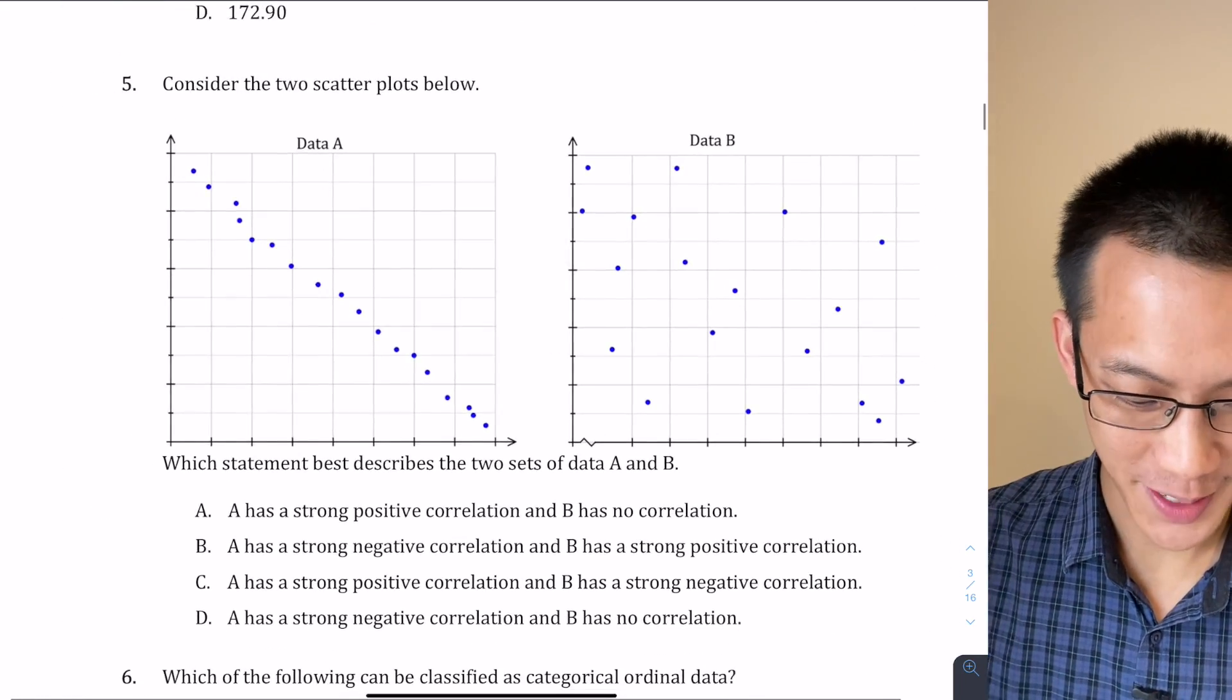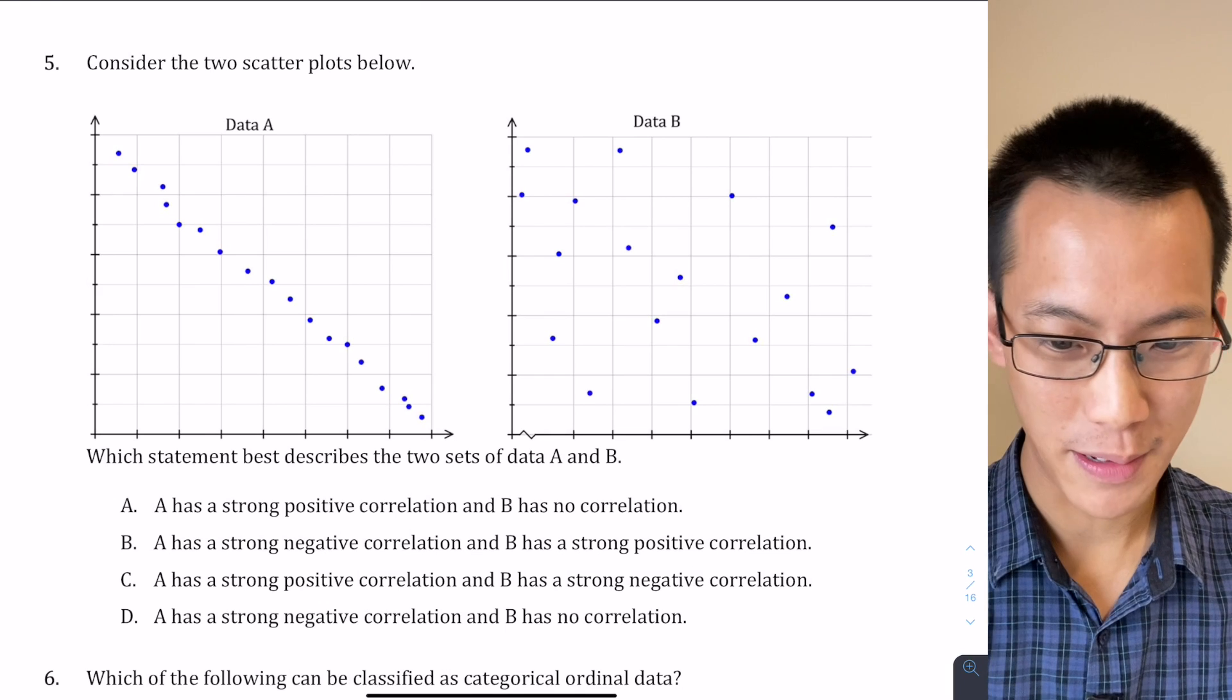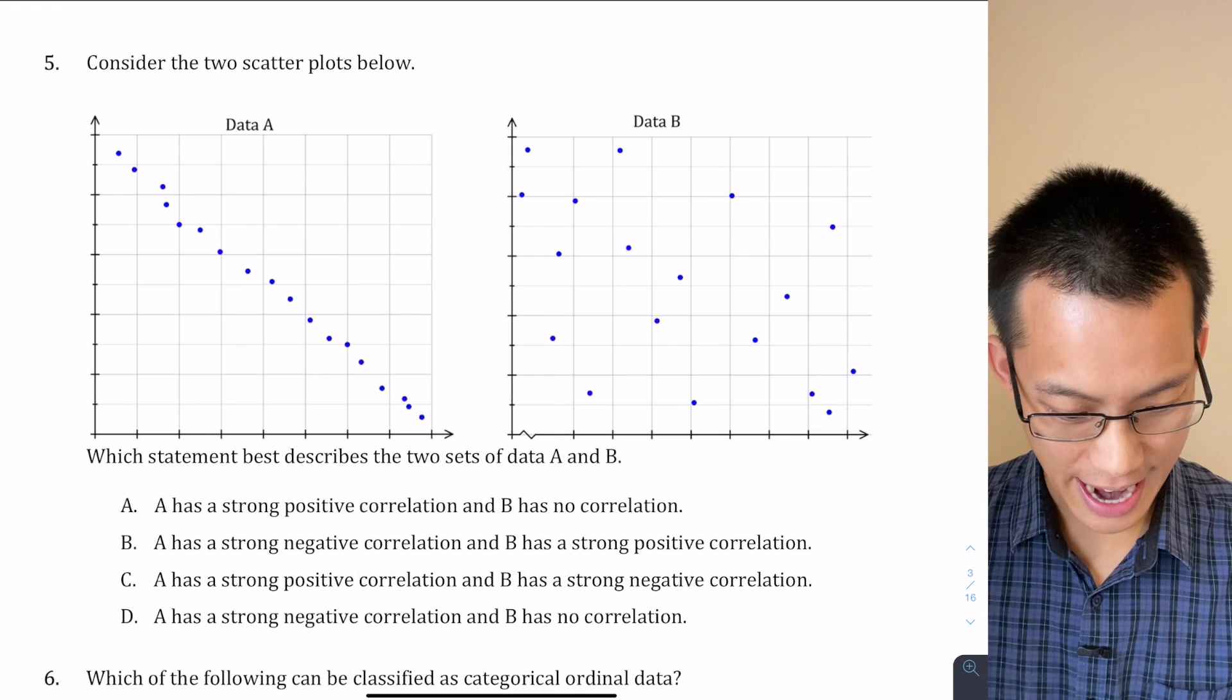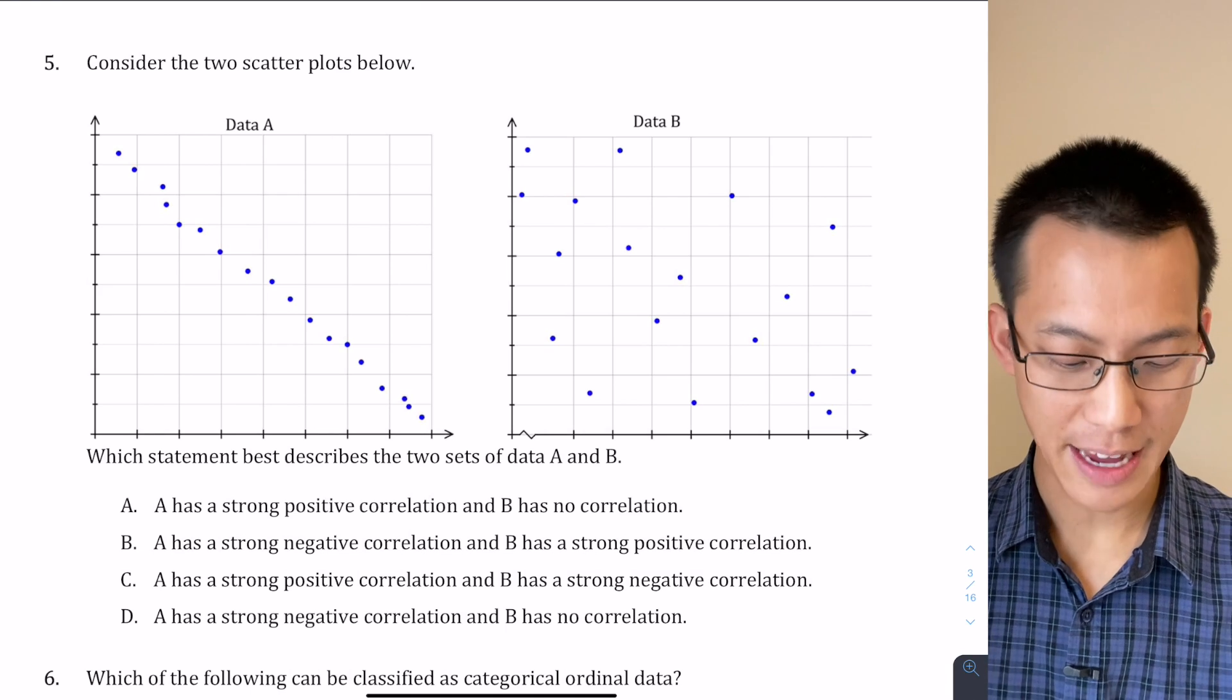Let's move on to number five, which is mercifully a bit simpler. Consider the two scatter plots below. So I've got Data A and Data B, which statement best describes the two sets, and there's a statement about A and there's a statement about B.